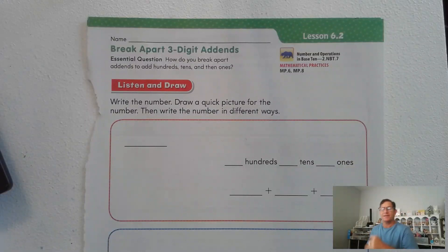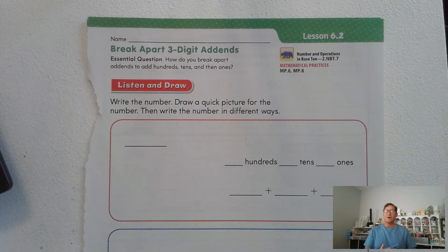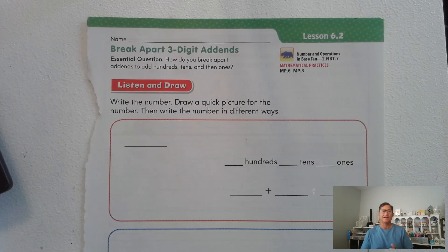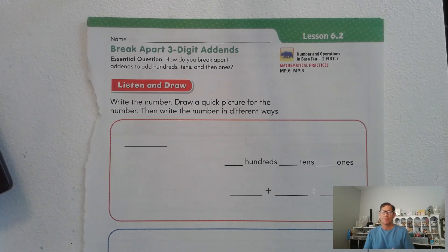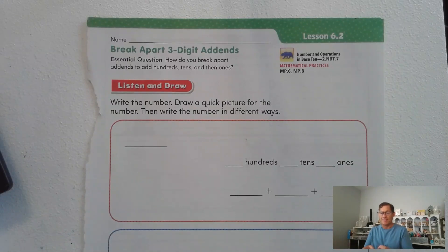Hello, our next lesson is Lesson 6.2: Breaking Apart Three-Digit Add-Ins. You should be able to explain, at the end of this lesson, how to break apart addends — the numbers that we add — to add hundreds, tens, and ones. Basically, we're breaking a three-digit number into its hundreds value, its tens value, and its ones value, and then adding those all together.